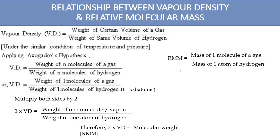First we will see what vapor density is. Vapor density is the density of a gas. The density of a solid or liquid is calculated by density = mass/volume, whereas density of a gas cannot be calculated the same way. Therefore, vapor density = weight of a certain volume of a gas divided by weight of the same volume of hydrogen. Hydrogen is taken as the standard.